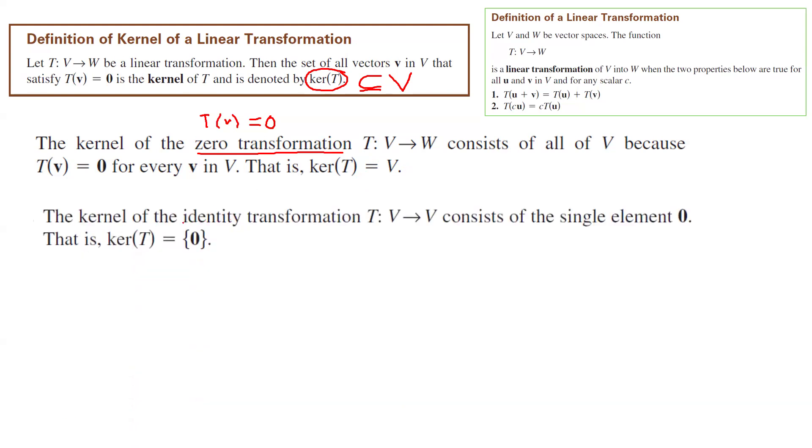The kernel of identity transformation consists of one element which is the zero vector itself. So this transformation takes any vector and maps it to itself. So if you want to find all vectors that are mapped to zero, you only get one single value which is the zero vector.